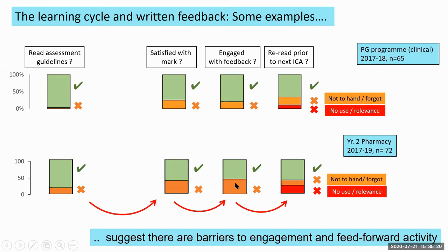Later on, when feedback should feed forward to a subsequent assessment, a significant percentage of students say they're not looking at it again. About 20% say the feedback was not to hand or they forgot to use it. More worryingly, a significant percentage say the feedback was of no use or relevance — they're dismissing it. Clearly there are problems in these two programs with satisfaction and engagement with feedback, and this pattern is fairly typical across multiple programs, even at postgraduate level.